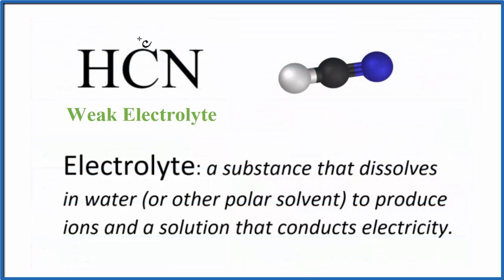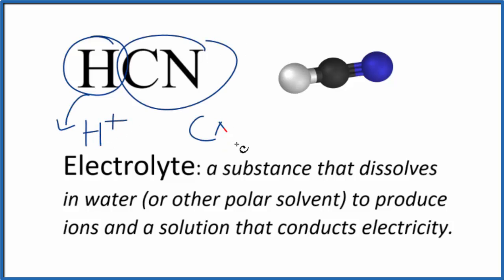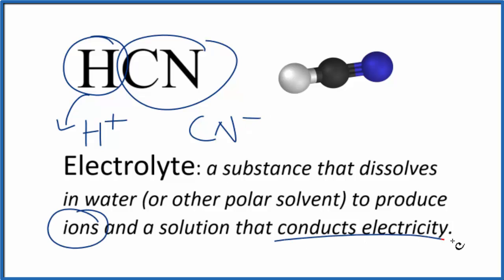So we have this weak electrolyte — this is a weak acid. Since HCN is a weak electrolyte, some of these hydrogen ions will come off as H+ in the water, and we'll get CN minus, the cyanide ion, but not very much — only a very small amount. Because of that, we call it a weak electrolyte. We do have ions, but it doesn't conduct electricity very much, just a very little bit.